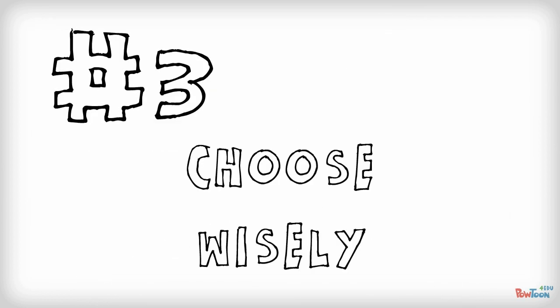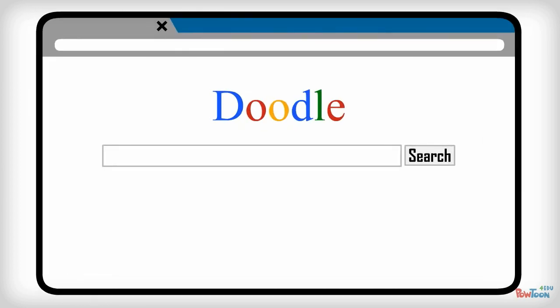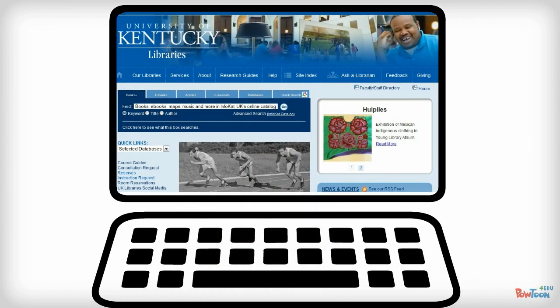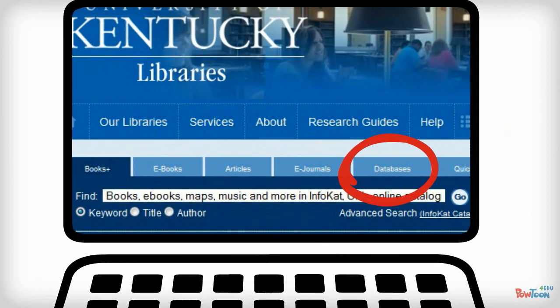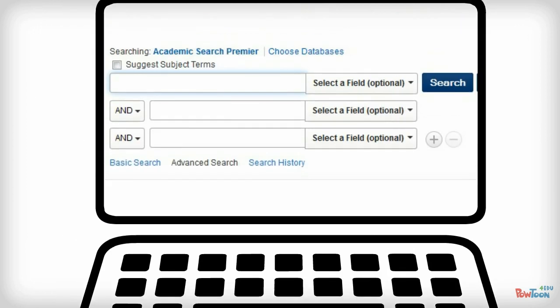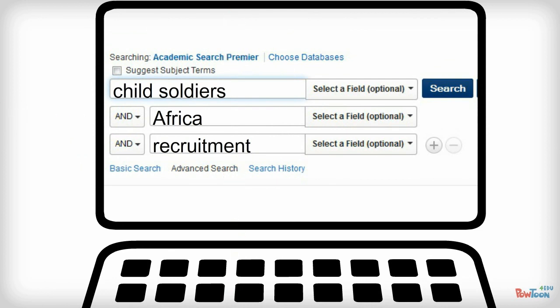Third, select your sources carefully. You'll be expected to go beyond general web search engines and use specialized college level resources like research databases, which work differently from other internet searches with their multiple search boxes and other powerful searching functions.